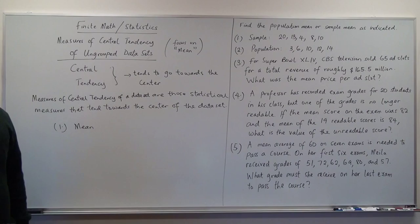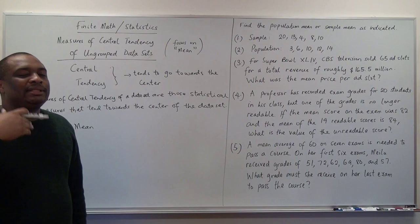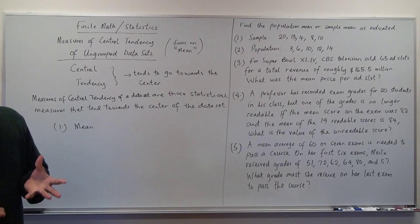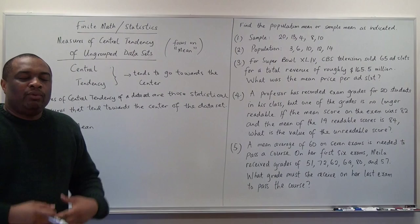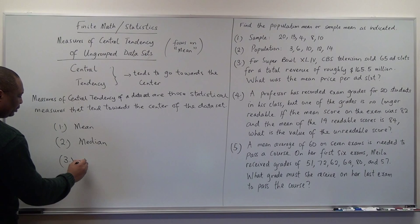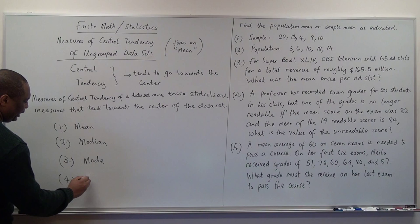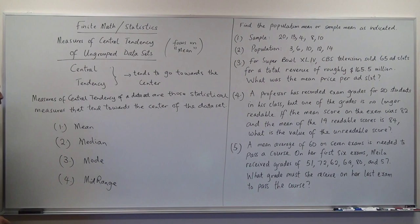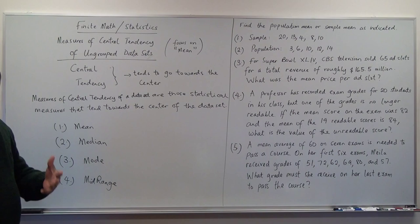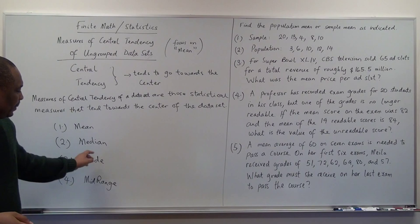The first one is what we call the mean — everybody refers to it as the average. When people say 'average,' they generally mean the arithmetic mean, though average can also refer to the median, mode, or mid-range. Number two, we have the median. Number three, we have the mode. And the fourth one is the mid-range. In this video we will focus on the mean and solve some questions; the rest will be covered in subsequent videos.